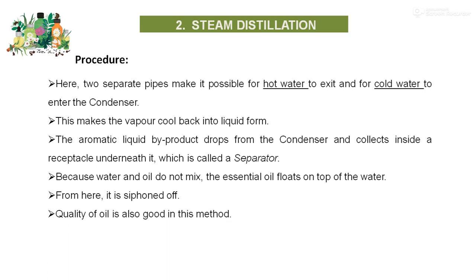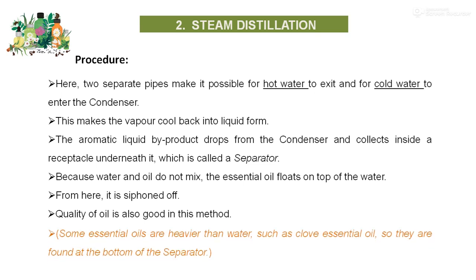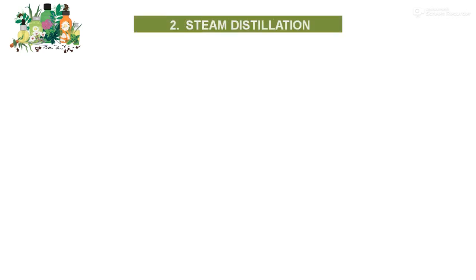The quality of the oil obtained is good and in large quantity. Some essential oils are many times heavier than water, like clove and many more. In such cases, the oil is obtained not from the upper portion but from the lower portion of the separator. For steam distillation, we need stainless steel, a condenser, and a separator.